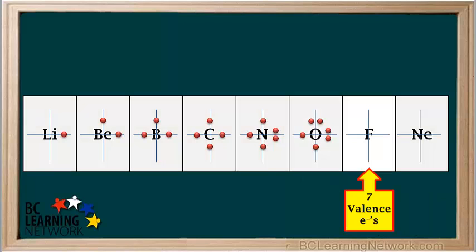Now we'll move on to fluorine, which is in group 17 and has seven valence electrons. A fluorine atom has three lone pairs and one unpaired electron. The unpaired electron can be on any of the four sides.